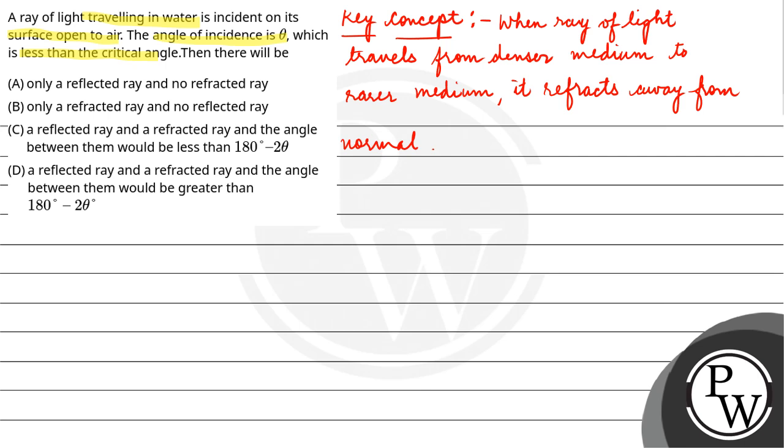Now here in the question there are two mediums: air and water, and the incident ray is falling on the interface. So this is the incident ray and the angle of incidence is given as theta. Part of it will get reflected and if this is normal, it will bend away from the normal.